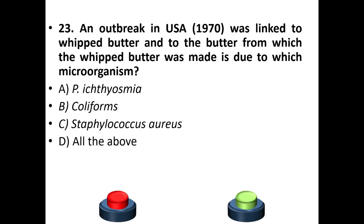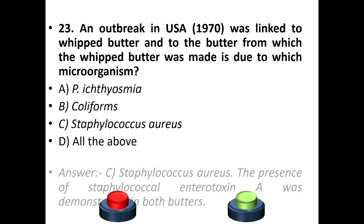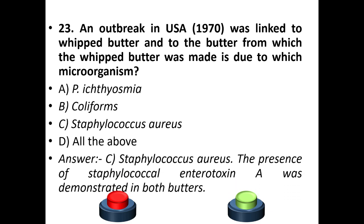Twenty-third question: an outbreak in the USA in 1970 was linked to whipped butter and the butter from which the whipped butter was made — due to which microorganism? A: Pseudomonas. B: Coliforms. C: Staphylococcus aureus. D: All of the above. Answer is C — Staphylococcus aureus. The presence of Staphylococcus aureus was demonstrated in both butters.